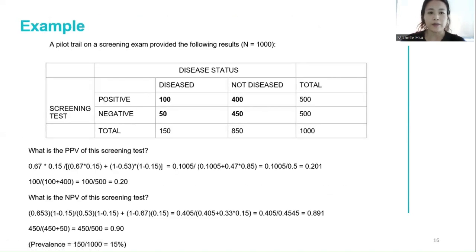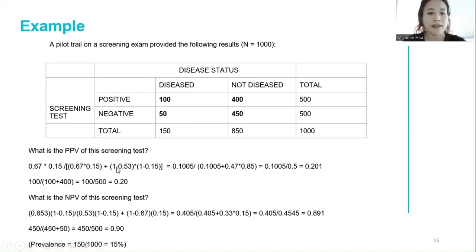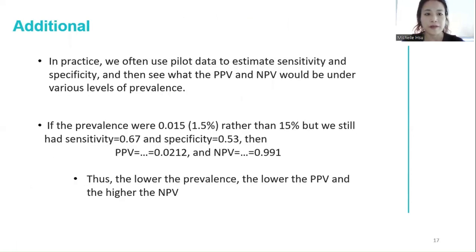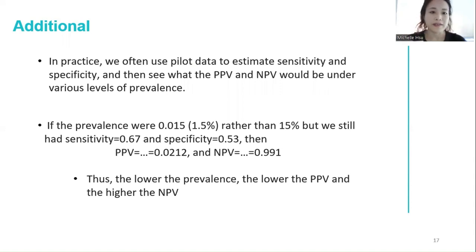In our practice today, you can derive PPV and NPV by plugging in the sensitivity, prevalence, and specificity, assuming that disease prevalence is provided. We use the same example here, assuming the study is representative of a larger population. The prevalence is calculated by taking 150 disease-status patients divided by 1,000 total, giving 15%. If you plug those values into the PPV and NPV formulas, you get the same answers.